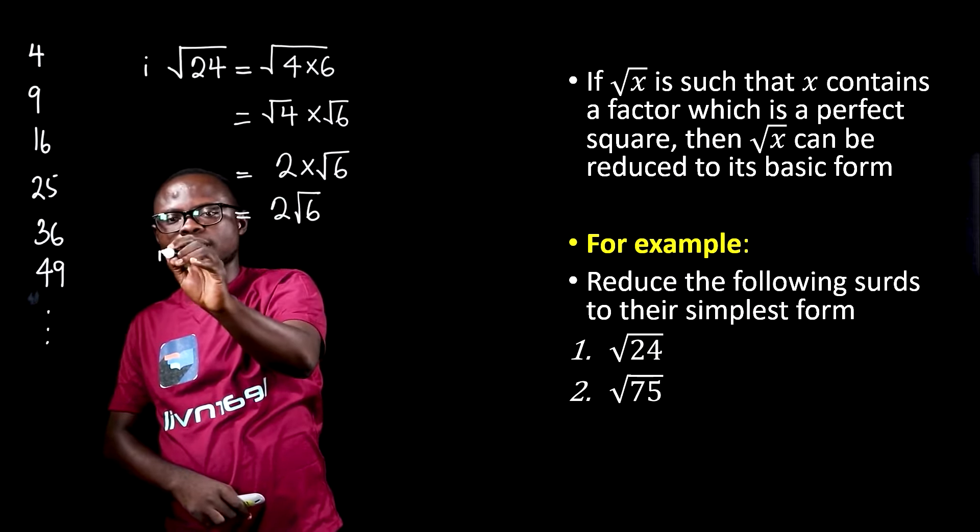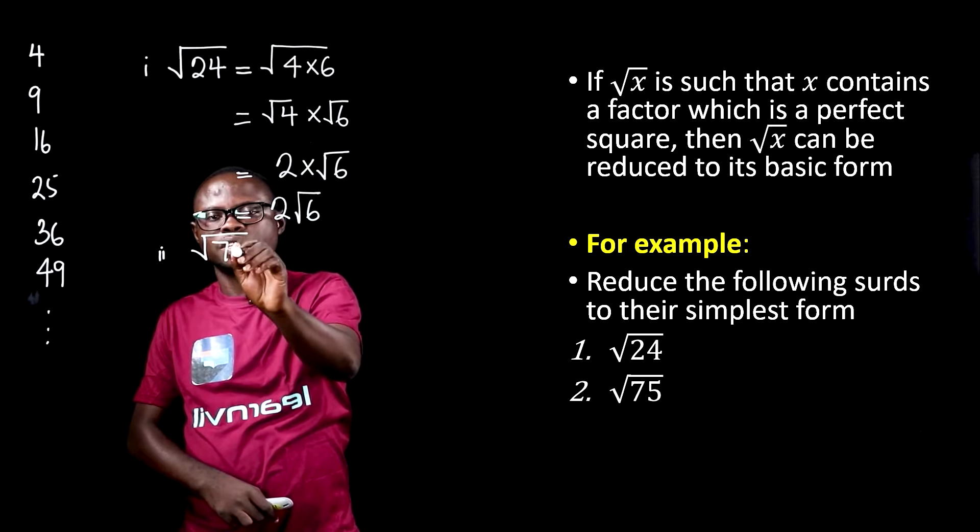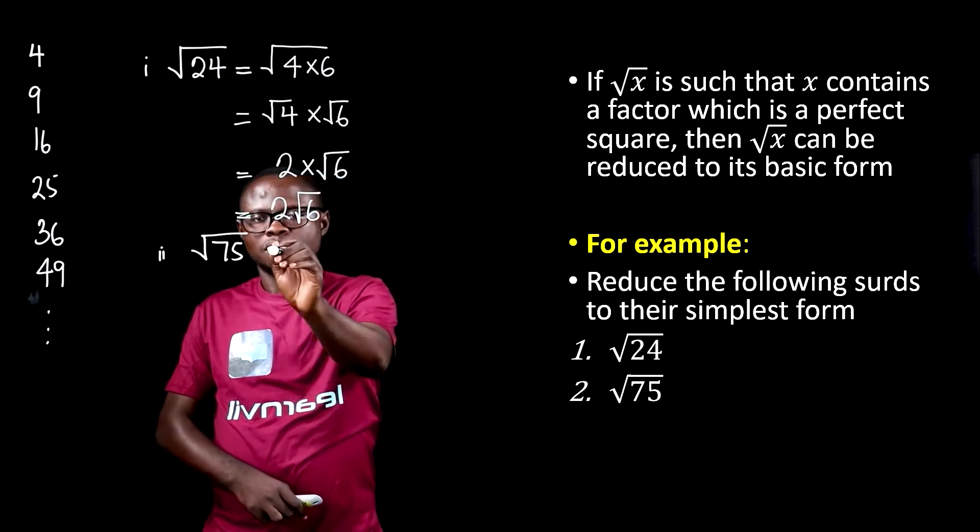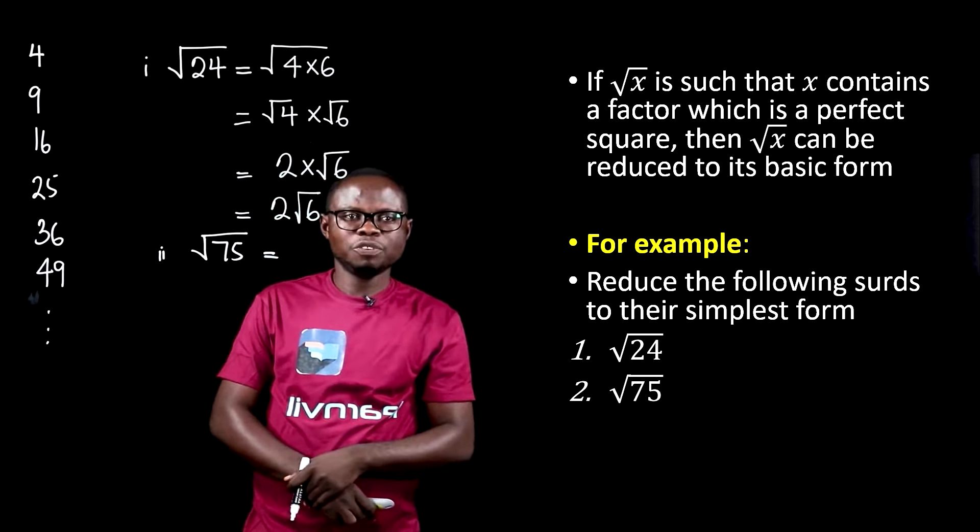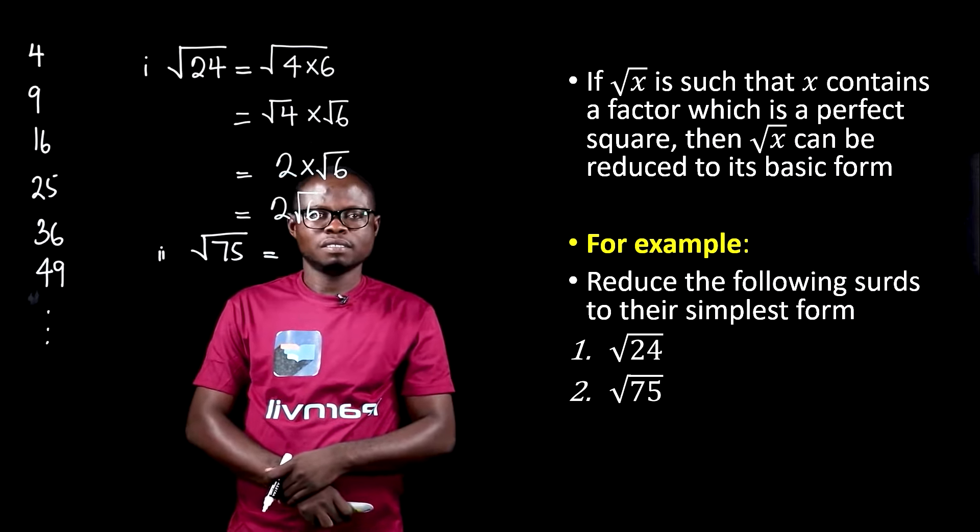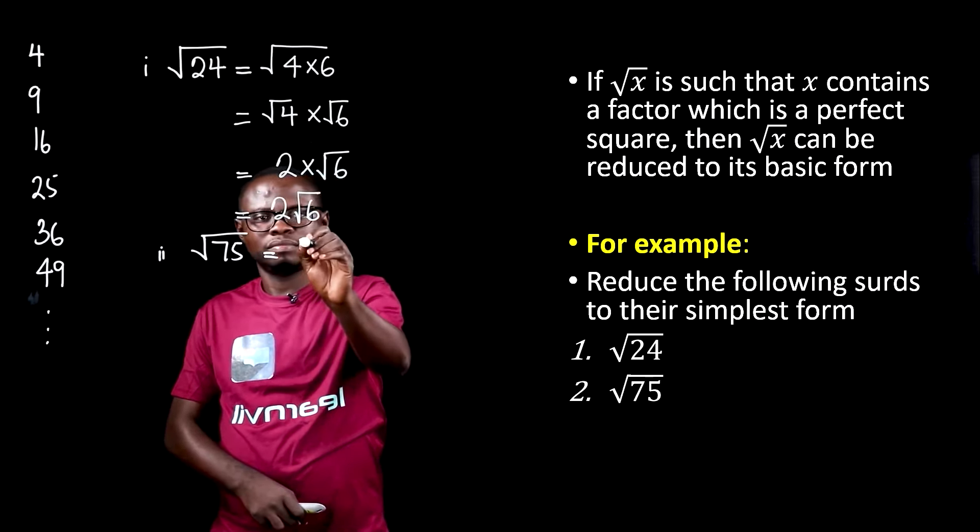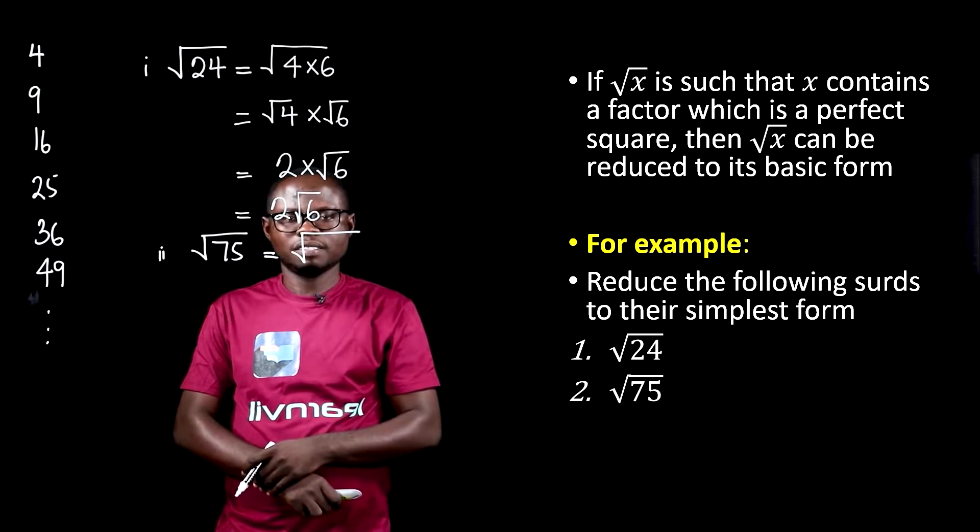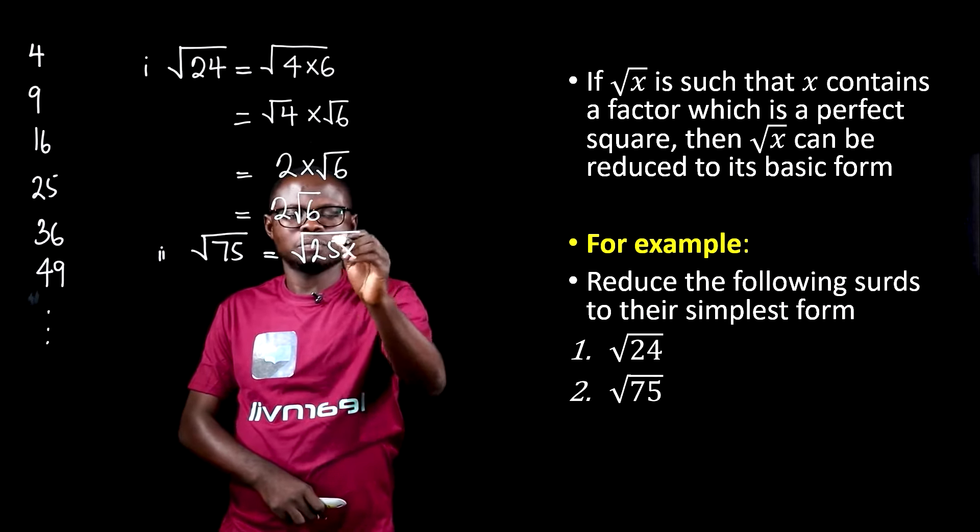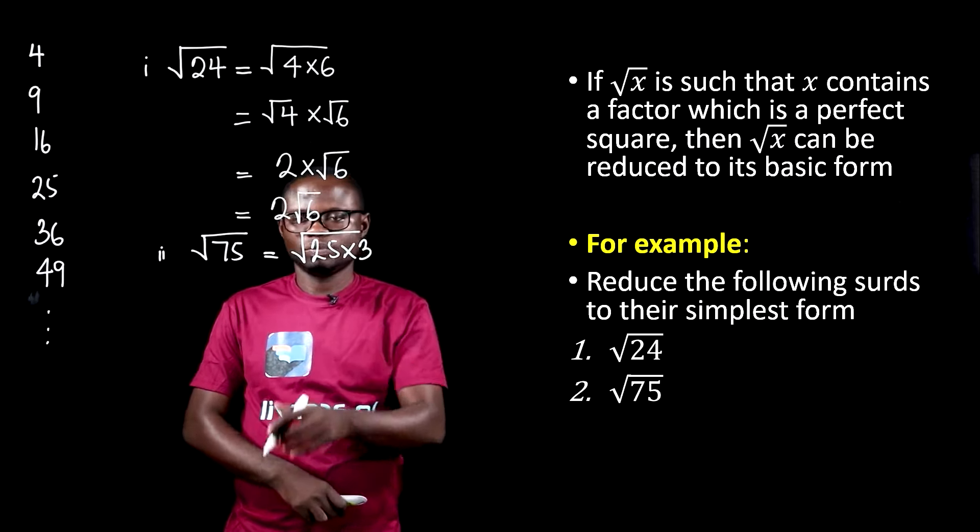Our second example is to reduce square root of 75. You have a few seconds to find which perfect square can divide 75. The expected answer is 25, and that is multiplied by 3.